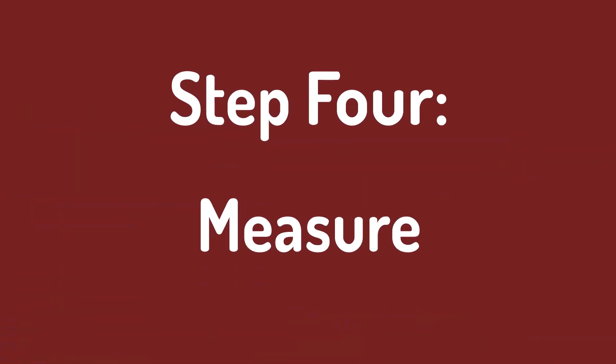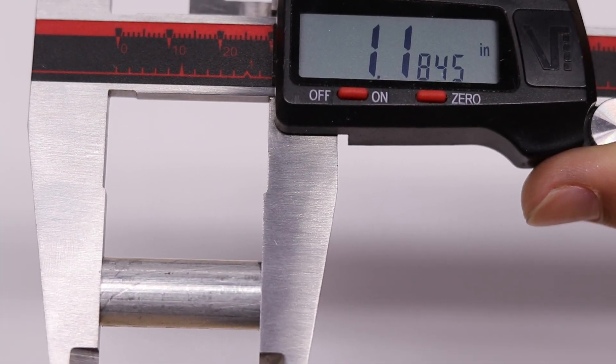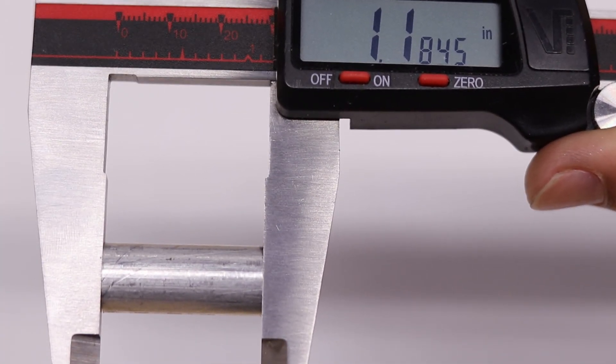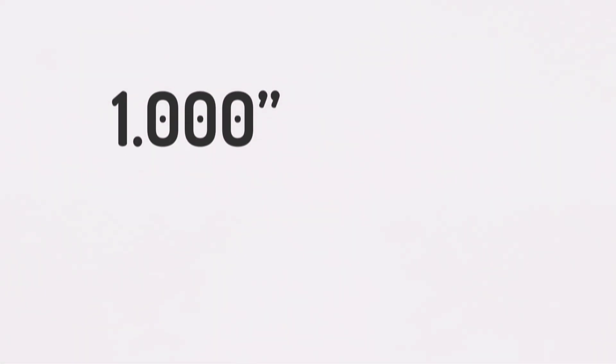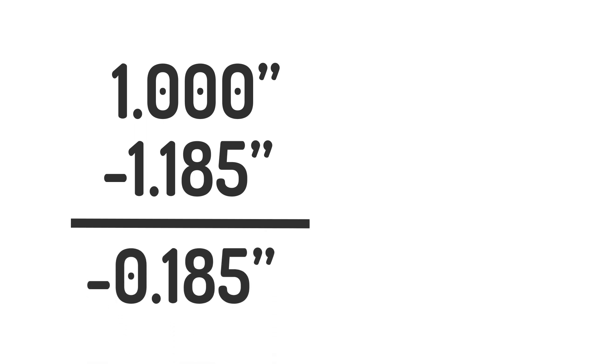Step four, measure. Now that we have two flat parallel faces, we can measure the length of the part. We see that this happens to measure at 1.185 inches. Because we want our final length to be exactly one inch, we know that we still have to remove 185 thousandths of an inch of material. For simplicity, we'll call this 185 thou. Write this number down and keep it with you.